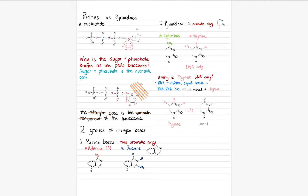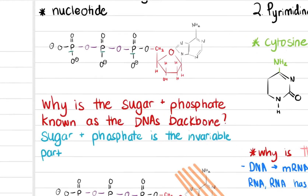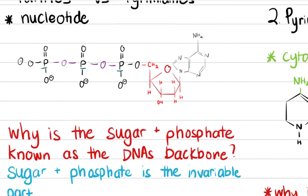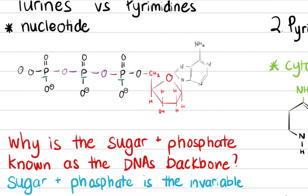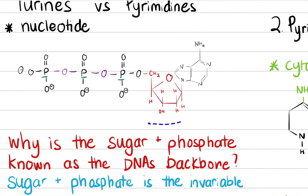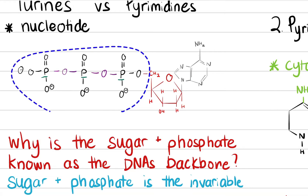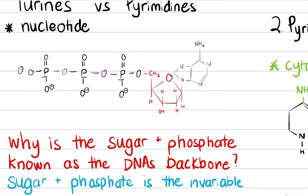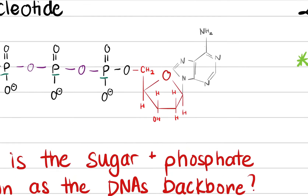In this video, we're going to talk about purines and pyrimidines. We've already talked about what a nucleotide is. A nucleotide is essentially the structure we see right here. It has an aromatic nitrogen base, it has a sugar, and it has some kind of phosphate attached to it.